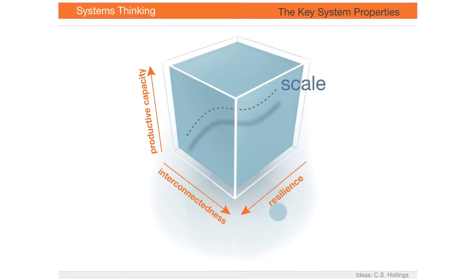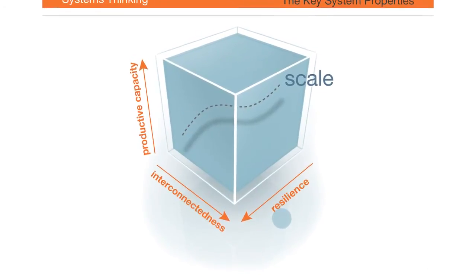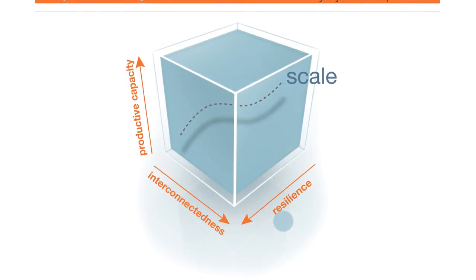So a system naturally goes through a cycle. As systems grow in interconnectedness, they also grow in productive capacity. Economic systems illustrate this point well. Eventually, these systems become highly productive and highly interconnected, yet highly vulnerable to external perturbations.